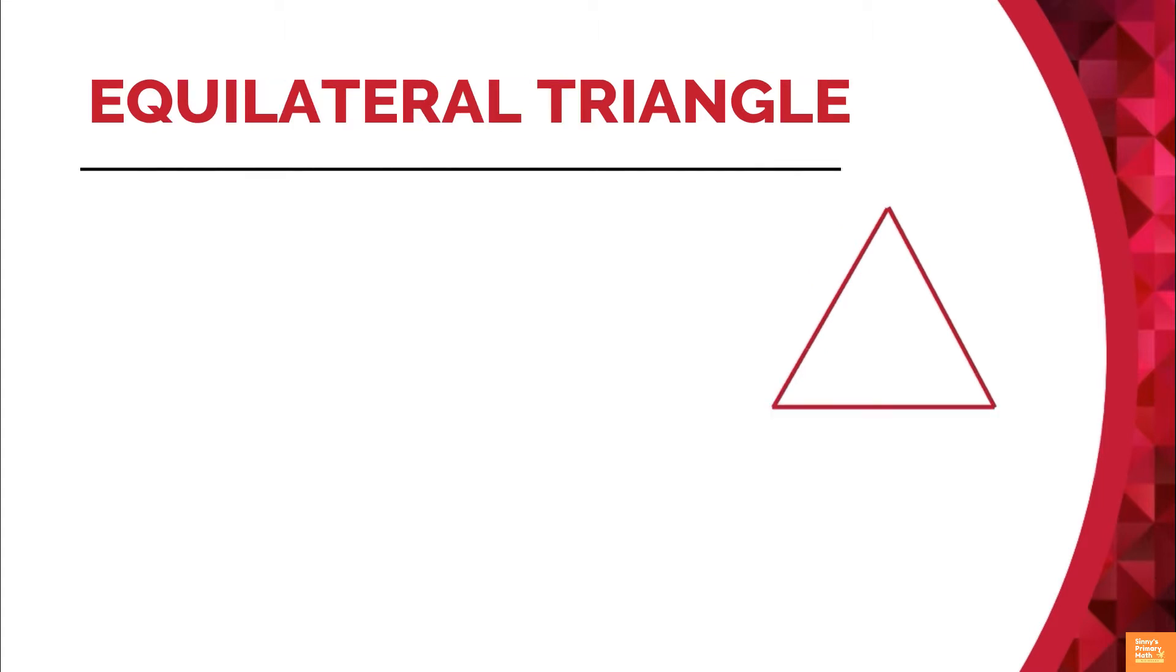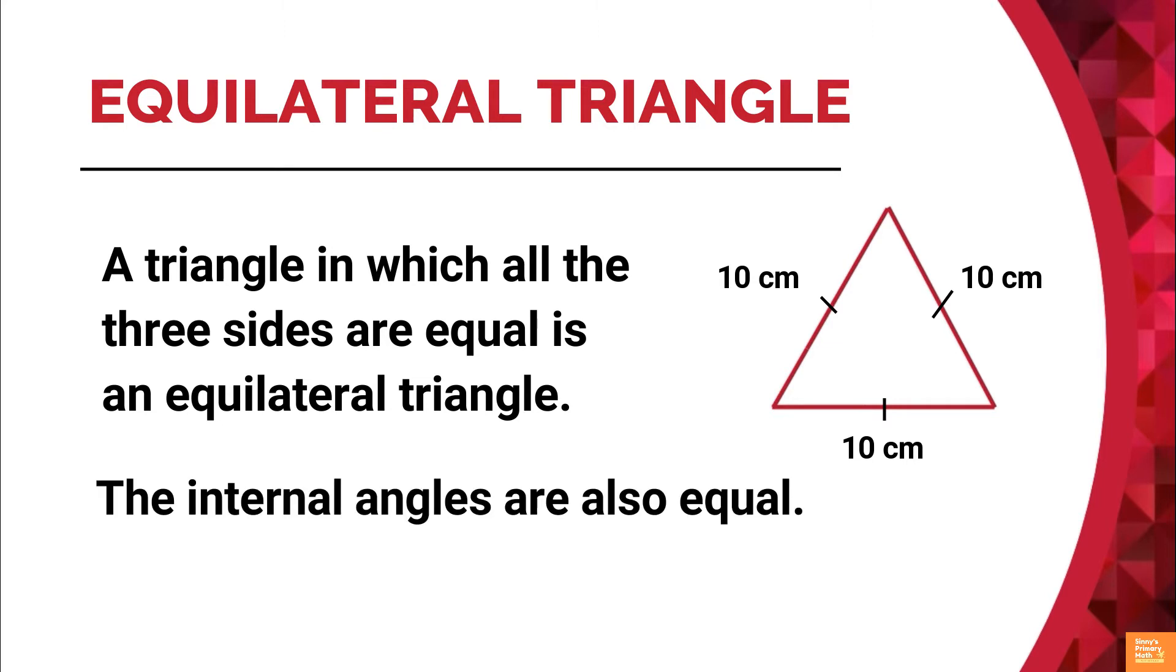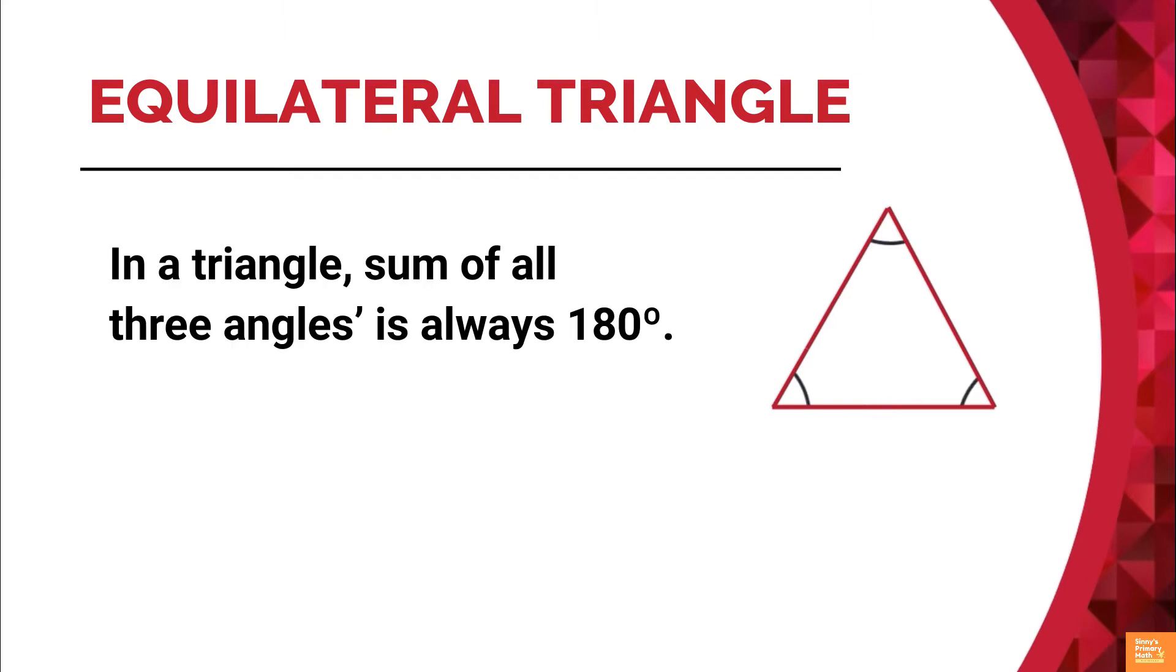Equilateral triangle: a triangle in which all the three sides are equal is an equilateral triangle. Here, the internal angles are also equal. If we divide 180 degrees by 3, we will get 60 degrees. That is, each angle in equilateral triangle measures 60 degrees each.